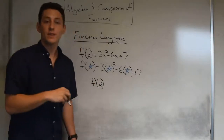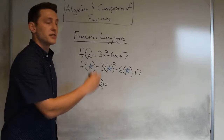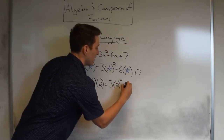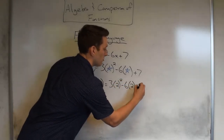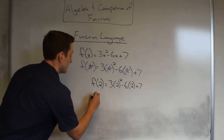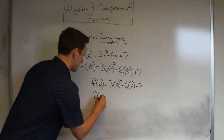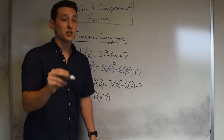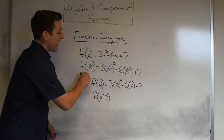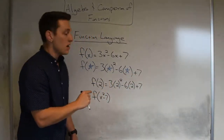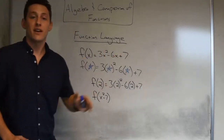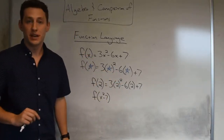For example, f(2): plug 2 in where you see x — that's 3(2²) − 6(2) + 7. You've done that with numbers many times. Now something a bit more interesting: f(x² − 7). We don't have to plug in just numbers. Using the fill-in-the-blank idea: f(blank) = 3(blank)² − 6(blank) + 7, where the blank is now (x² − 7).